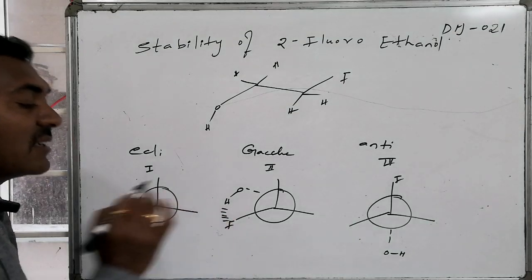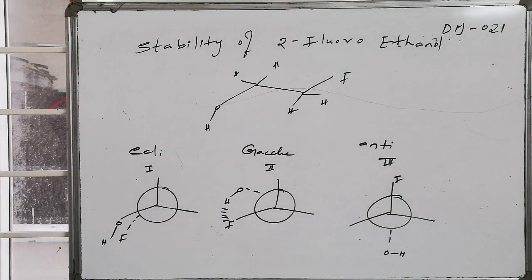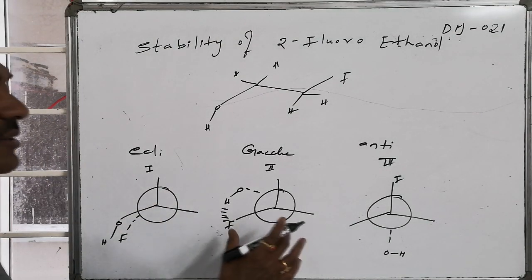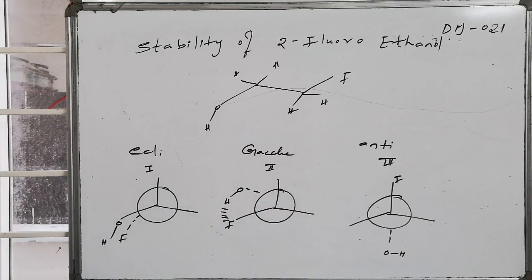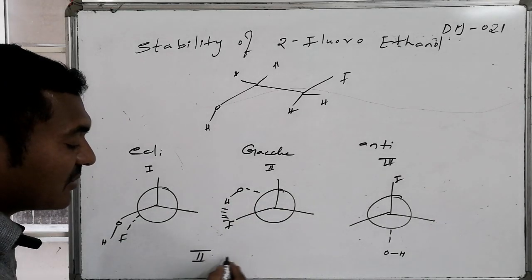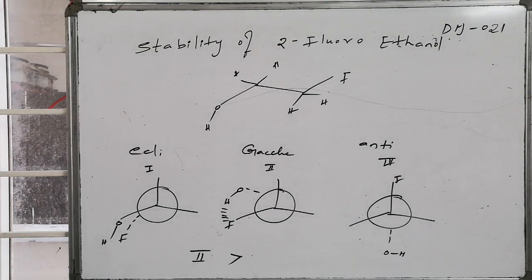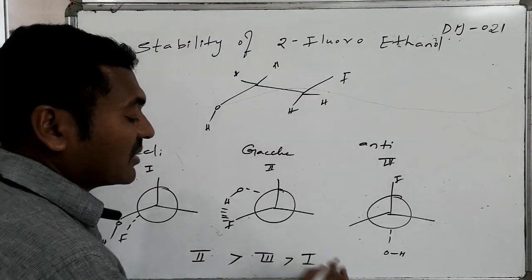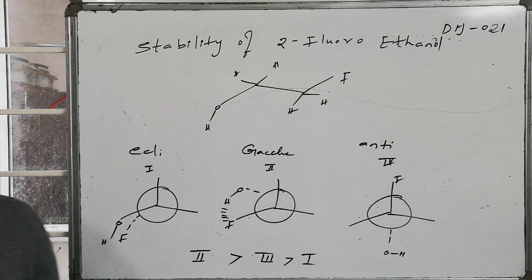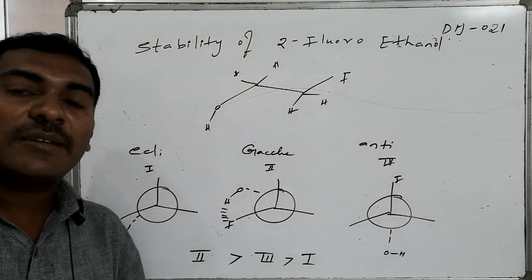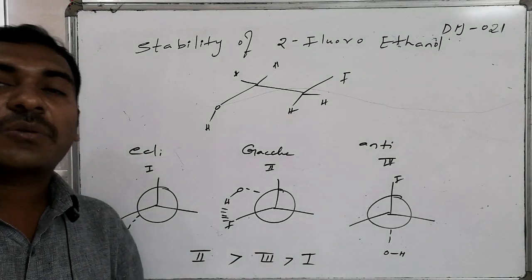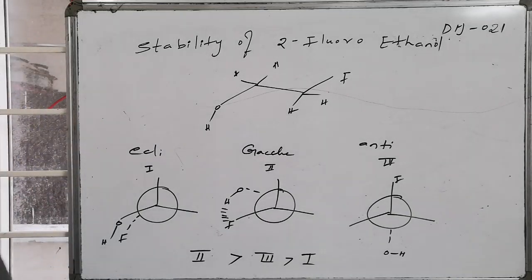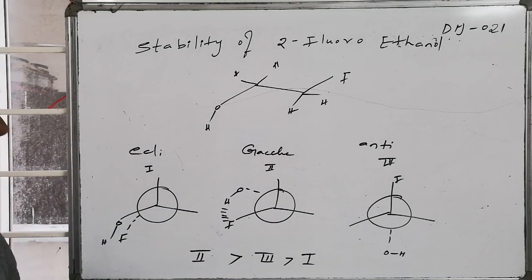In the gauche conformation there exists intramolecular hydrogen bonding, which offers extra stability. Therefore, the gauche conformation is the most stabilized. After gauche, the anti-conformation is present, and after anti, the eclipsed conformation is present. The highest stability is for the gauche conformation because of intramolecular hydrogen bonding.